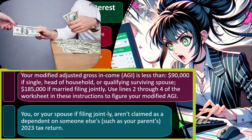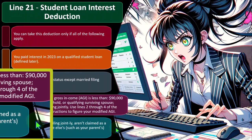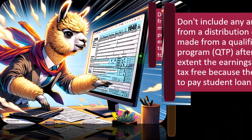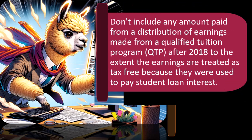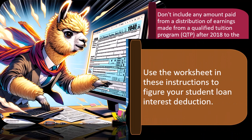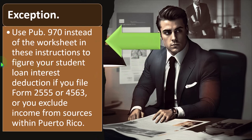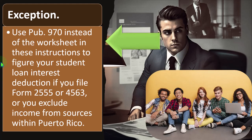You or your spouse, if filing jointly, aren't claimed as a dependent on someone else's — such as your parents' — 2023 tax return. Don't include any amount paid from a distribution of earnings made from a qualified tuition program (QTP) after 2018, to the extent the earnings are treated as tax-free because they were used to pay student loan interest. Use publication 970 instead of the worksheet if you file Form 2555 due to foreign income, Form 4563, or you exclude income from sources within Puerto Rico.